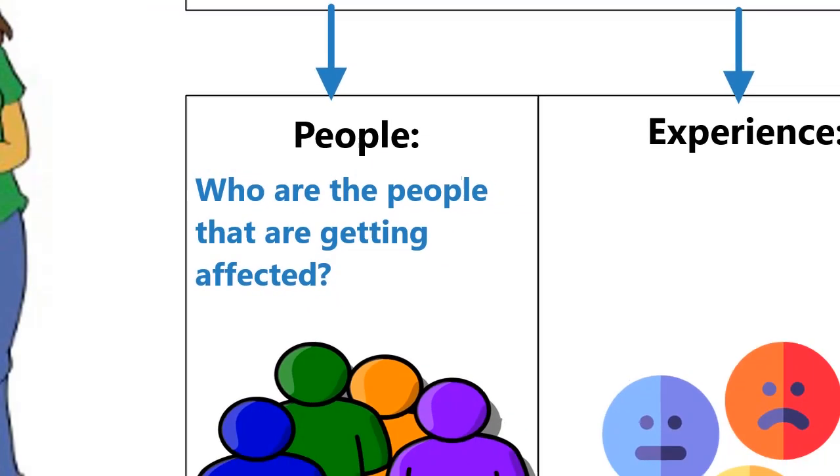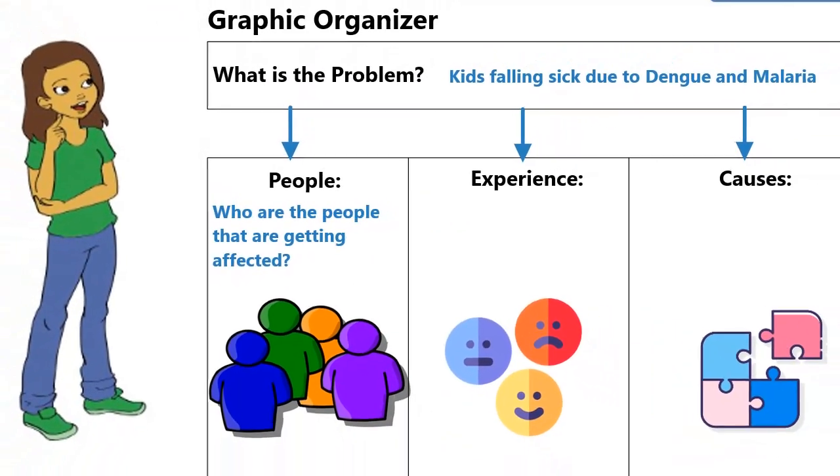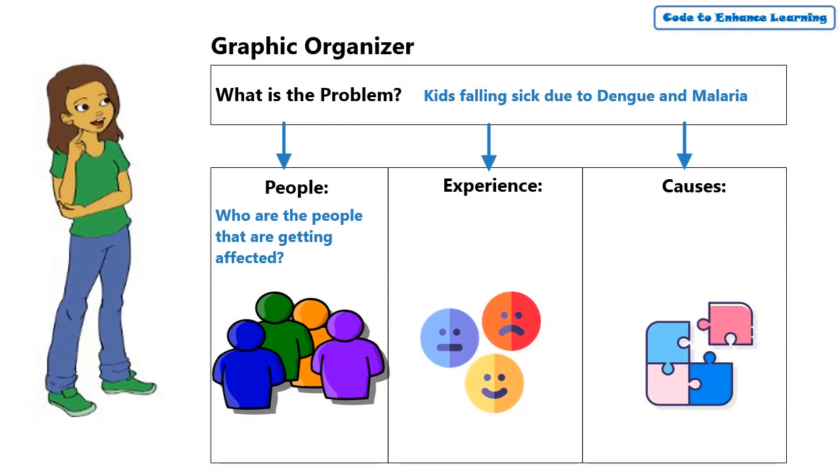Our second bucket is experiences. I think I should record in what way are the people getting affected. How are they dealing with the problem? Is there enough support to deal with the problem? I am going to write this as, how is it affecting the people?